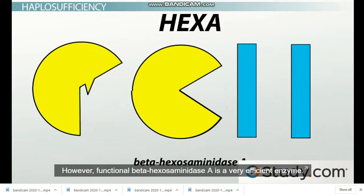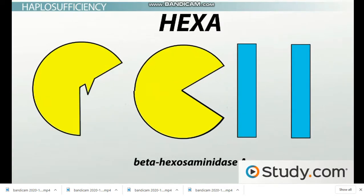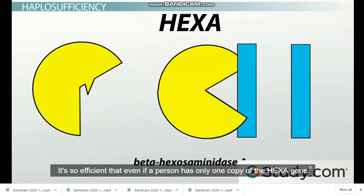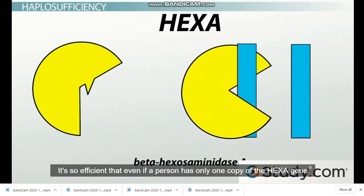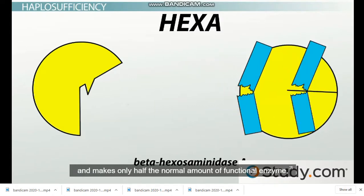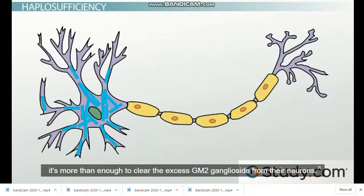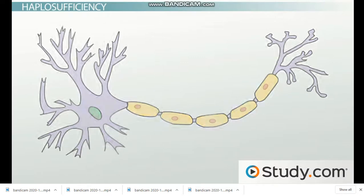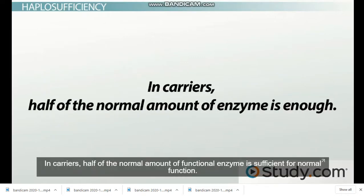However, functional beta-hexosaminidase A is a very efficient enzyme. It's so efficient that even if a person has only one copy of the Hex-A gene and makes only half the normal amount of functional enzyme, it's more than enough to clear the excess GM2 ganglioside from their neurons. In carriers, half of the normal amount of functional enzyme is sufficient for normal function.